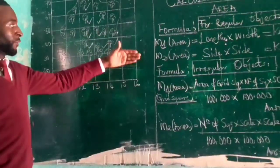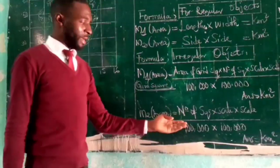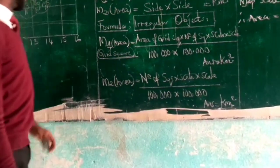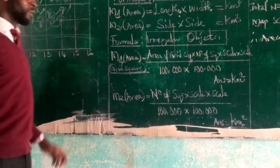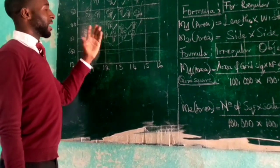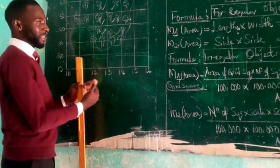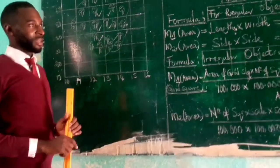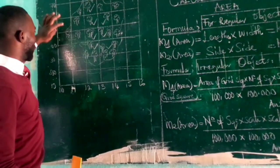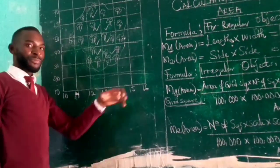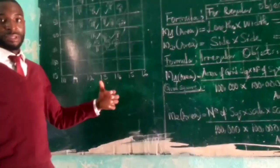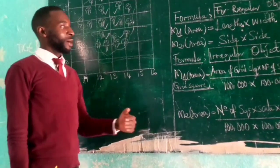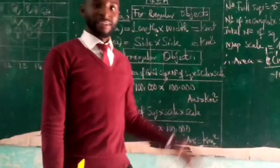If you followed the lesson, the other related formula uses the number of squares times the scale times the scale, and is different from this one because we don't consider the area of a grid square separately. This is used when the map does not have grid lines. In that case, we use a graph paper placed beneath the map so the boundary limits of the feature are traced onto it. Since graph paper is already graduated in grid boxes, we count the full squares and incomplete squares the same way and apply the formula to get the surface area in km².